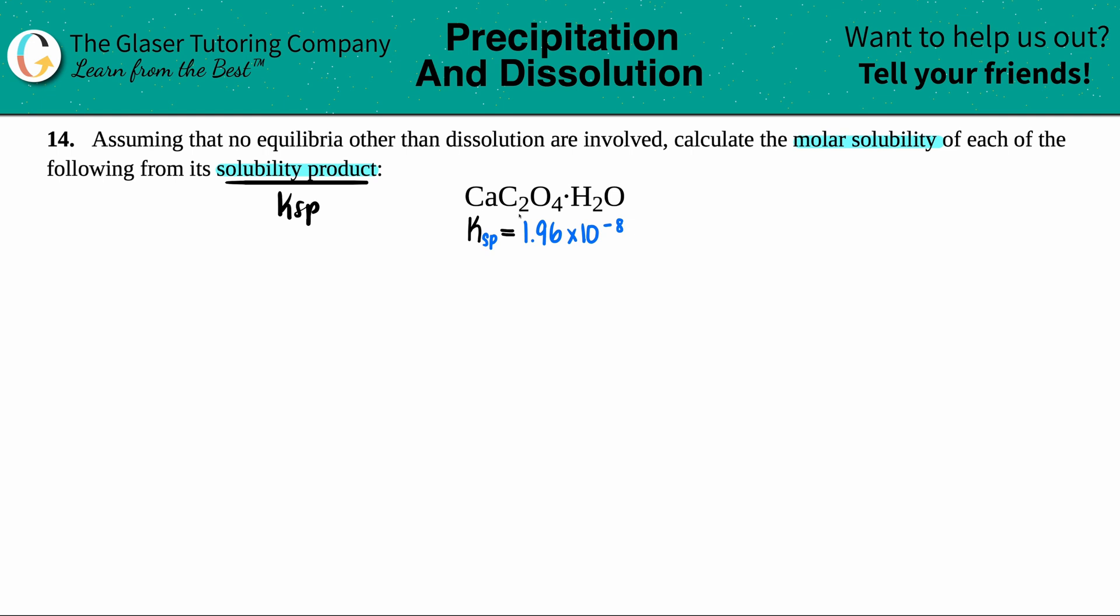But when we have a Ksp, we got to have a balanced equation. Keep in mind that when we're dealing with solubilities and solubility products, that means that whatever the ionic compound that you're starting with is going to dissociate dissolution into its ions at equilibrium.